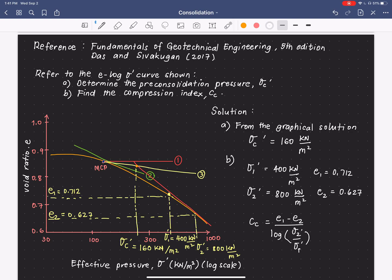Okay, so, when we substitute, we have 0.712 minus 0.627 divided by log of 800 over 400.